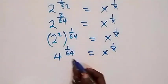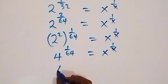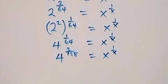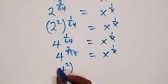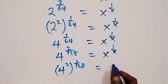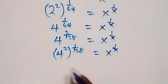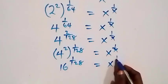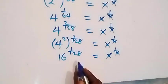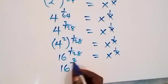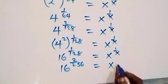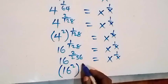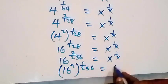Also, the equivalent fraction of 1 over 64 is 2 over 128. So we have 4 raised to power 2 over 128, separating as 4 squared raised to power 1 over 128, equals to x raised to power 1 over x. Then 4 squared is 16, raised to power 1 over 128. Also 1 over 128 can be written as 2 over 256, giving 16 raised to power 2 over 256. Separating as 16 squared raised to power 1 over 256, equals to x raised to power 1 over x.